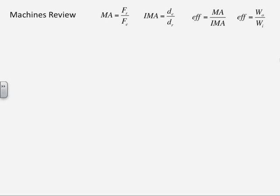We're going to do a little machines review dealing with simple machines. Recall that there are several types of simple machines including levers, pulleys, wheel and axle, wedges, and things like that. We're going to focus on a wheel and axle pulley as our example.